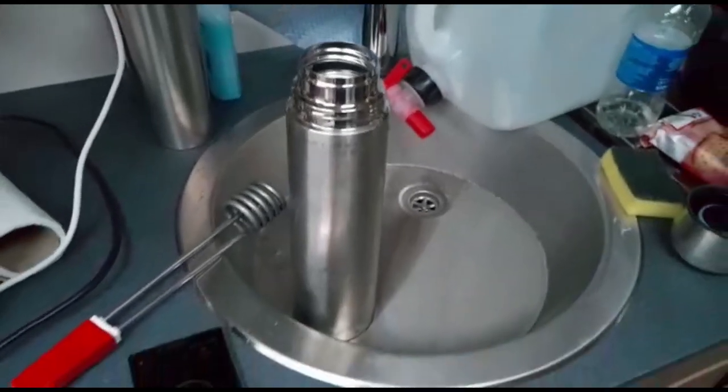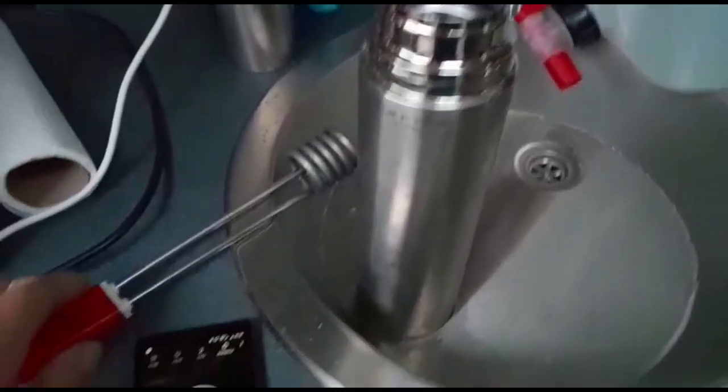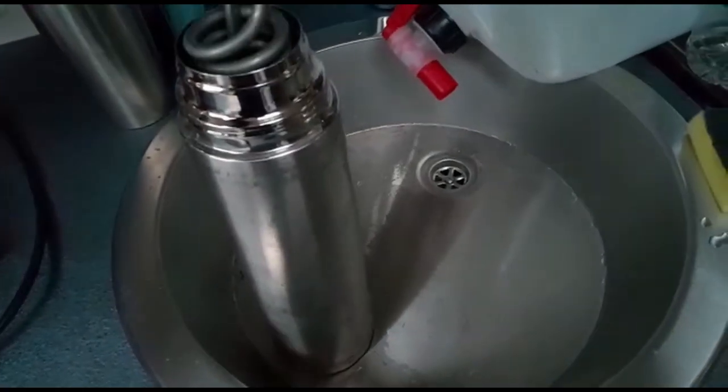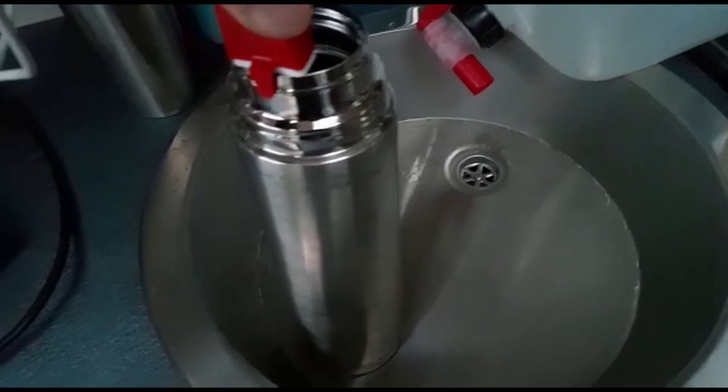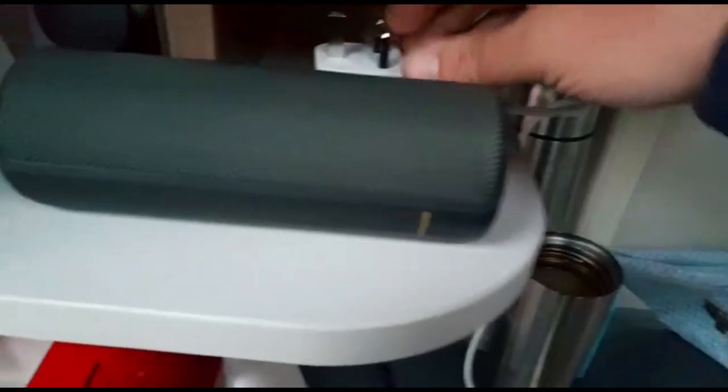In this video you will see how we heat water in our Toyota Caravan with relatively low power consumption. For this we use an immersion heater that has a nominal power consumption of 1000 watts. The water is inside a 1 liter steel thermos flask.